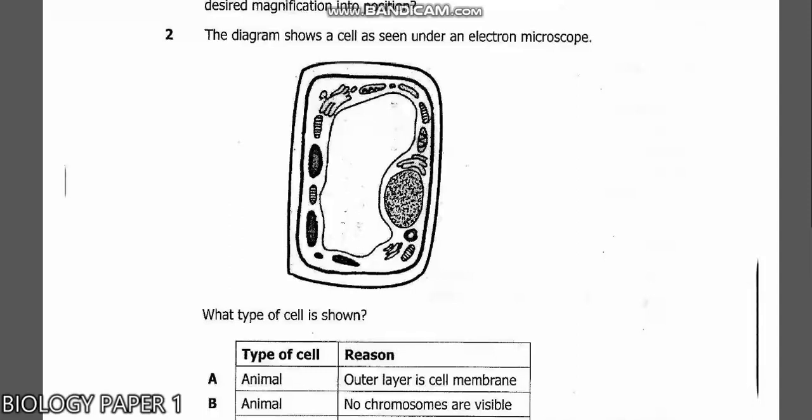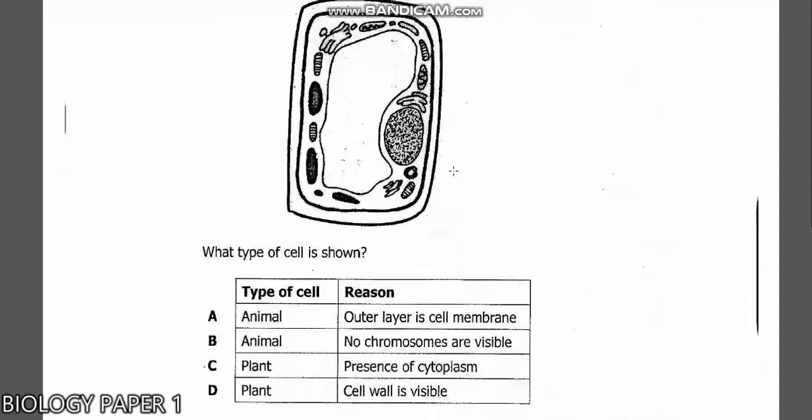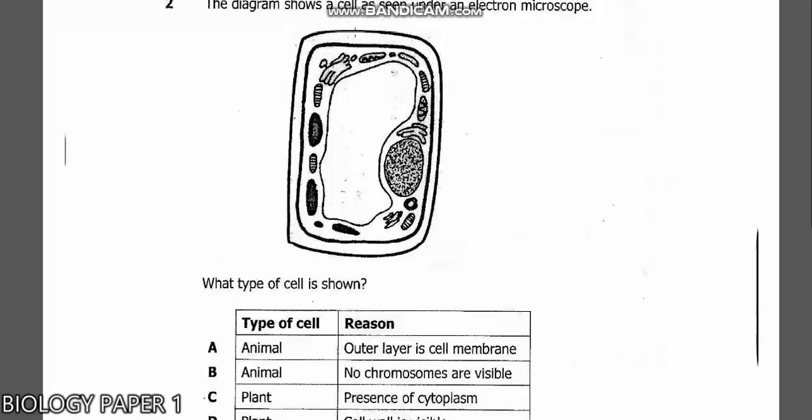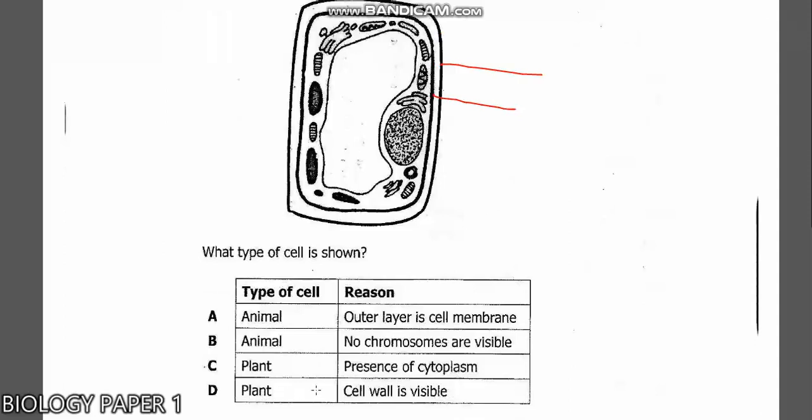Question 2 says the diagram shows a cell as seen under an electron microscope. What type of cell is shown? Look at this cell. It has two membranes. We have the cell wall and the cell membrane. This will be a plant cell. The reason being you can say there are two membranes outside, so you have the cell wall and the cell membrane. It's a plant cell, and because the cell wall is visible, we can see it.